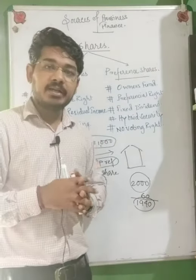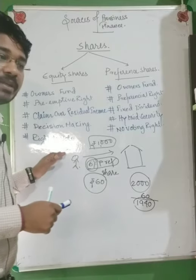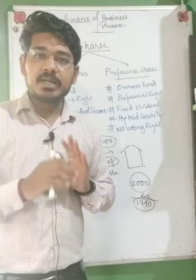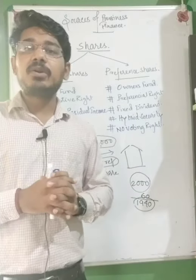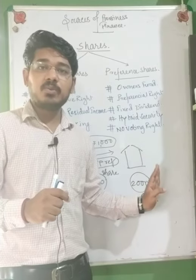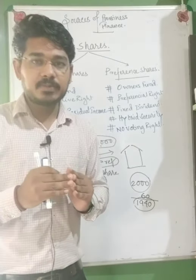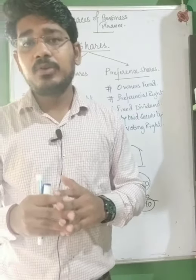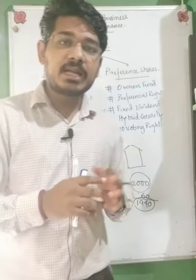Moving on to the next point — no voting right. Preference shareholders do not have the voting rights that equity shareholders have. In case of taking any sort of decision for the business or doing any business activity, preference shareholders cannot put forward any opinion or suggestion. Though they are the owners, they are not given the right to vote or share their opinions for business purposes. It is equity shareholders who have the right to vote and take decisions for the business.